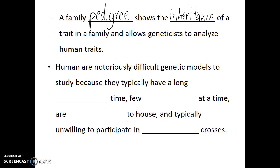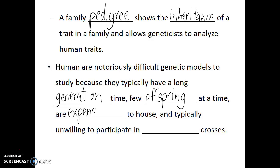Some of the reasons for this is because we have a long generation time — on the order of decades, potentially. We have few offspring at a time, with single births by far being the most common. And, as parents know, humans are very expensive to house and raise.